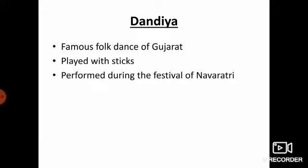Once again, let me repeat. Bhangra is performed to celebrate the harvest season — men dance joyously to the loud beat of drums. Rauf dance is the famous folk dance of Jammu and Kashmir, performed on all festivals, especially Eid and Ramzan days, with women performing in groups with simple footwork. Dandiya is the famous folk dance of Gujarat, played with sticks during the festival of Navratri.